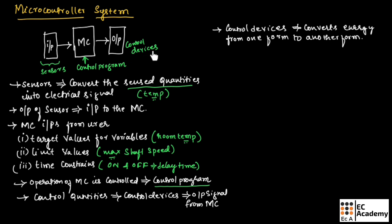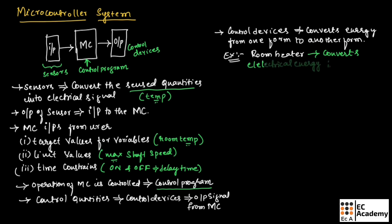These control devices convert energy from one form to another form. For example, if we take a room heater, this room heater converts electrical energy into heat energy — one form of energy is converted into another form of energy.